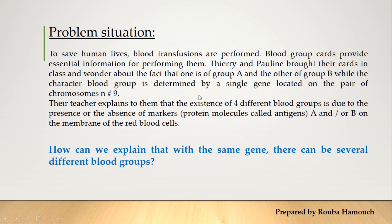There is a single gene located on chromosome 9 that codes for the blood group, but we have four different phenotypes — four different blood groups. So the problem is: how can we explain that with the same single gene, there can be several different blood groups?